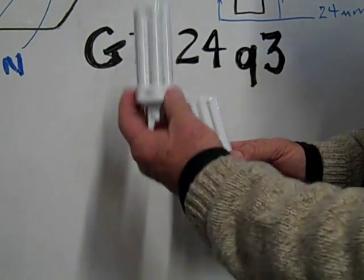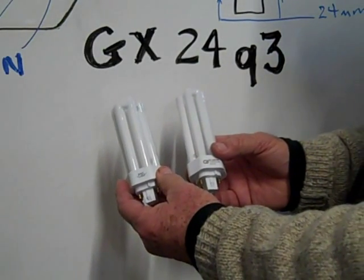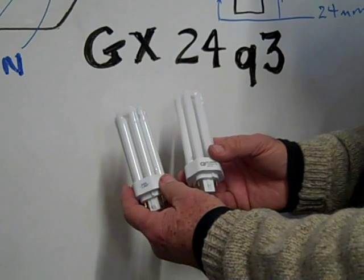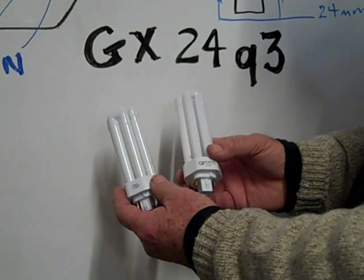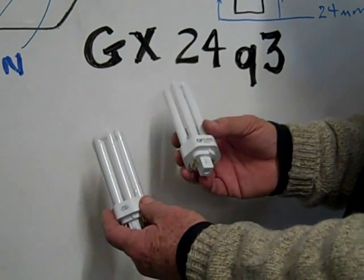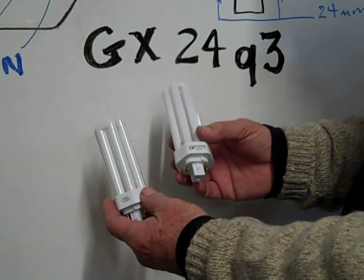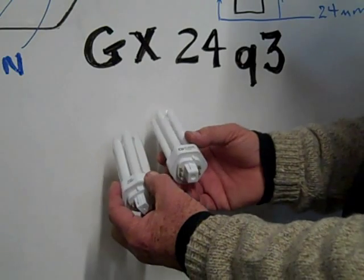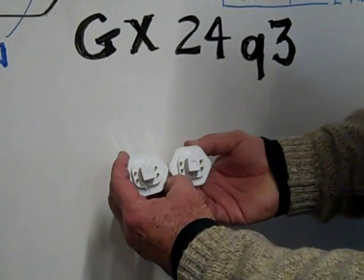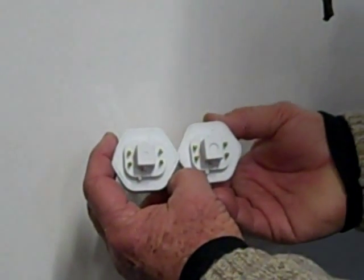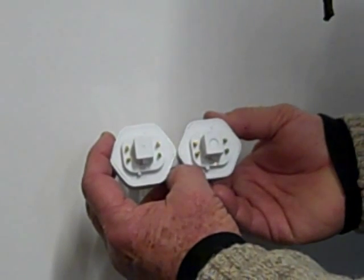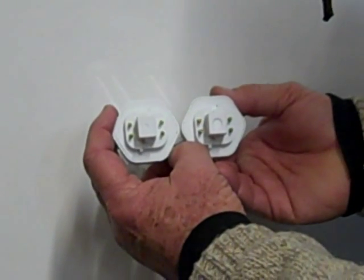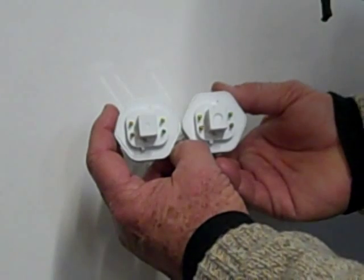This is a 26 watt triple tube GX24Q3 base and this is a 32 watt triple tube GX24Q3 base. You can see the bases are identical, pin configuration as well as the guides on the base that are offset.